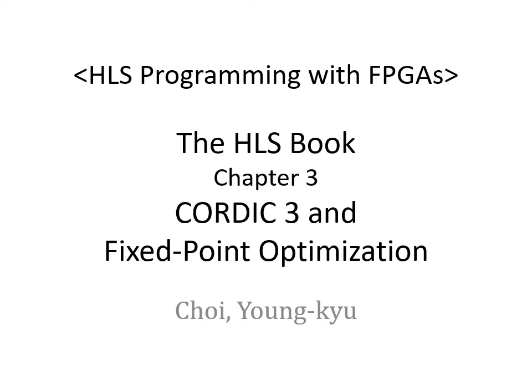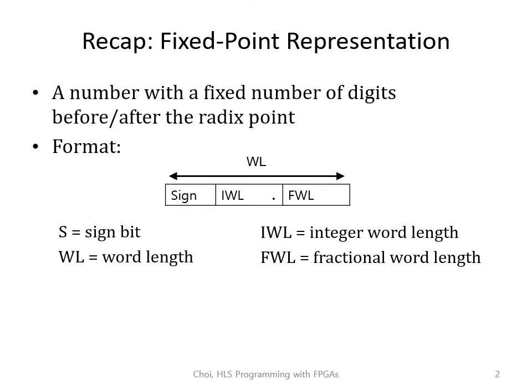Welcome to the third part of the CORDIC chapter. In the last class, we learned about fixed-point representation. A fixed-point number is composed of three components: the sign bit, the integer part, and the fractional part. The length of the integer part is called IWL, and the length of the fractional part is called FWL. The word length is the combined length of all these components.